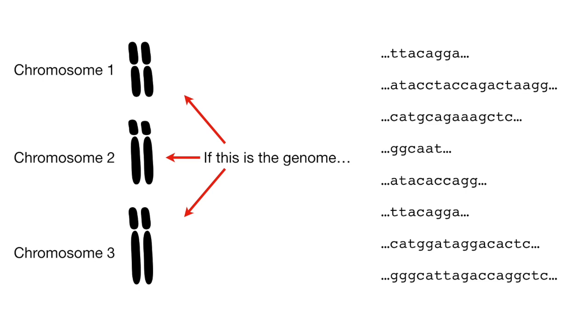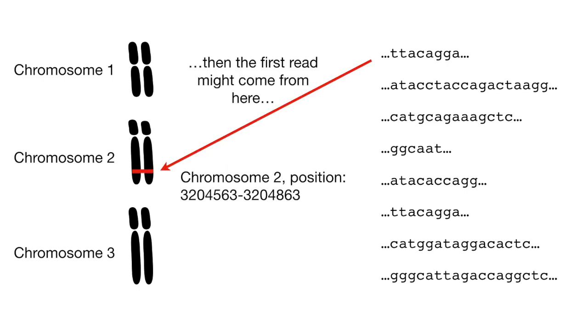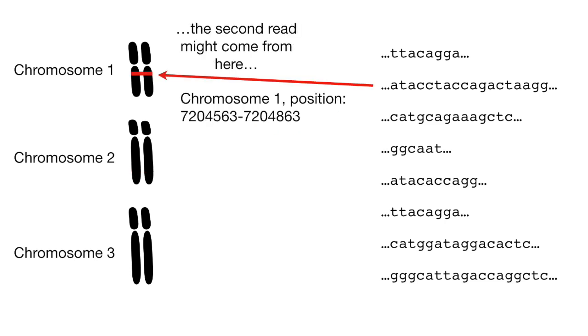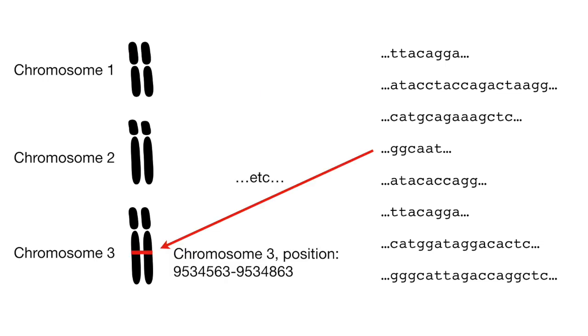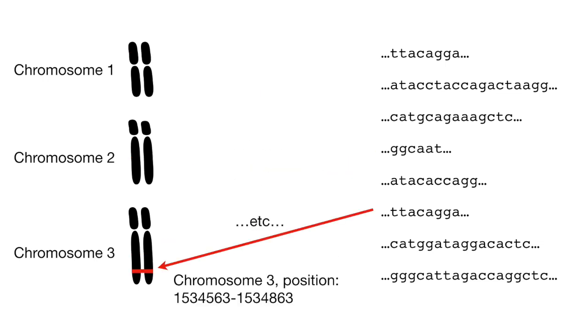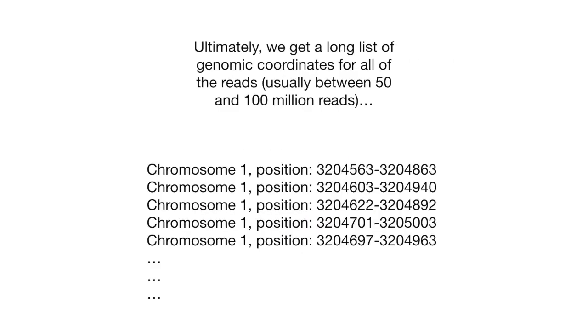And then align the high-quality reads to a genome. That is to say, if this is the genome, the first read might come from here, a location on chromosome 2. The second read might come from here, a location on chromosome 1. The third read might come from here, another position on chromosome 1. Ultimately we get a long list of genomic coordinates for all the reads, usually between 50 and 100 million reads.